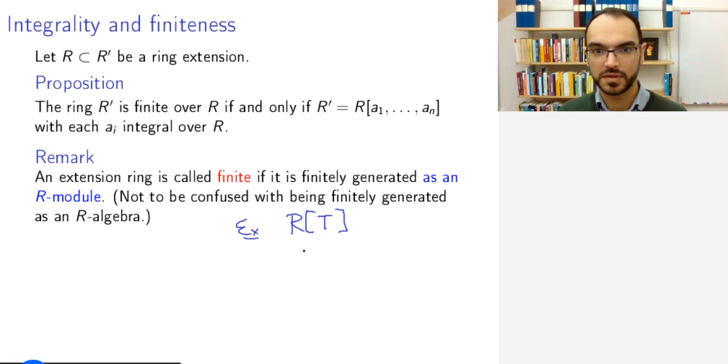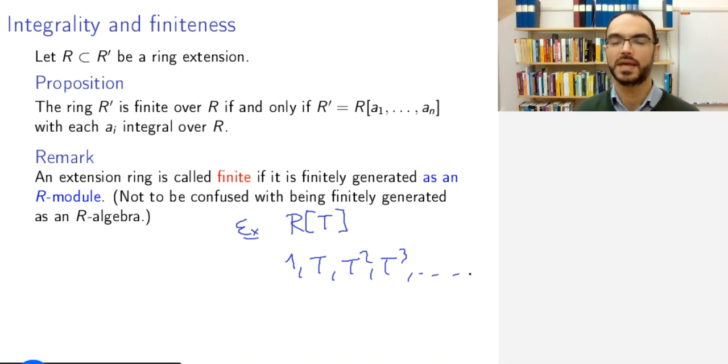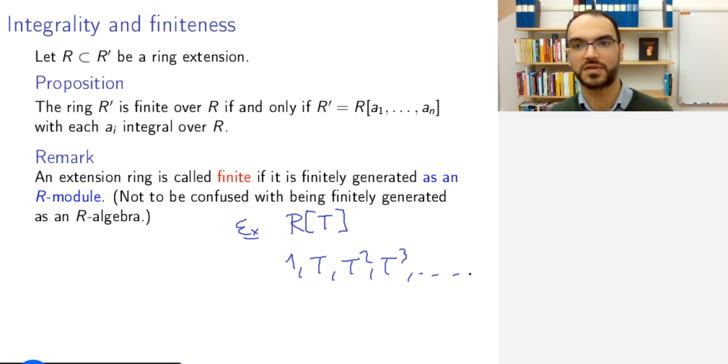But as an R-module, it has the generators 1, t, t^2, t^3, and so on, and so it's not finitely generated as a module. So this is a very strong statement about finiteness over R'.